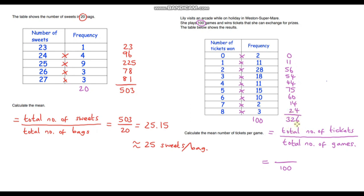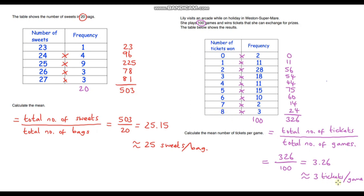They won 326 tickets in 100 games, so the mean number of tickets per game is 326 divided by 100, which gives 3.26. Rounding that gives approximately 3 tickets per game. That makes sense because in some games they won no tickets and the maximum was eight, so our answer has to be between zero and eight.